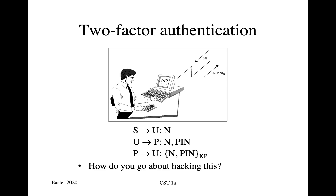The server sends to the user a random challenge N. The user then pulls out his Watchword, which looks like a calculator, except it's got a red button on it that says 'calculator response.' He puts in the random number N and his own personal identification number. The device then calculates the encryption of N and PIN under a key KP, which is shared by the server. This value is displayed on the calculator, and the user then types it into his terminal and sends it off. If he's right, he's allowed to get logged on. So this is the very basic two-factor authentication. Take a minute and see if you can think about how you might go about hacking this.